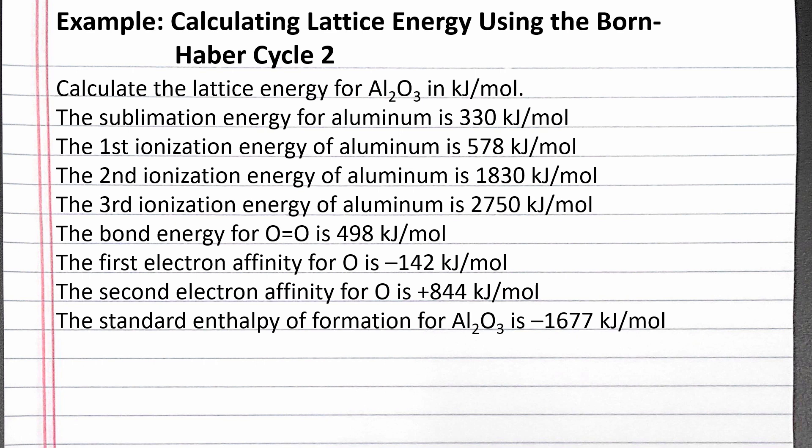We're given the sublimation energy for aluminum, the first, second, and third ionization energies of aluminum, the bond energy for an oxygen-oxygen double bond, the first and second electron affinity of oxygen, and the enthalpy of formation for aluminum oxide.